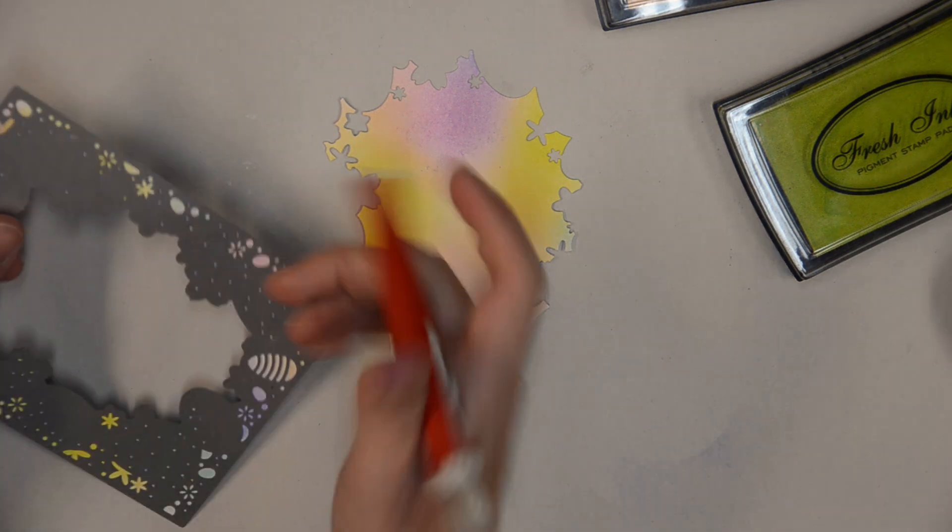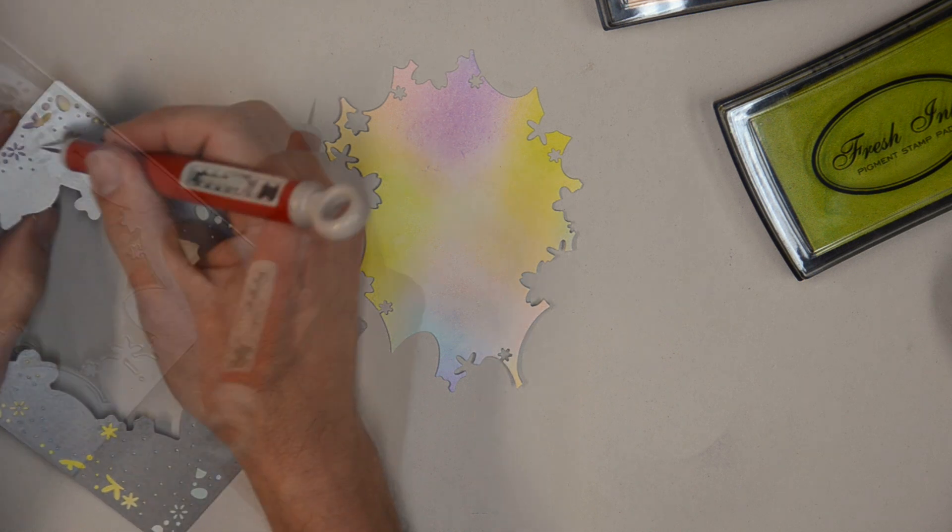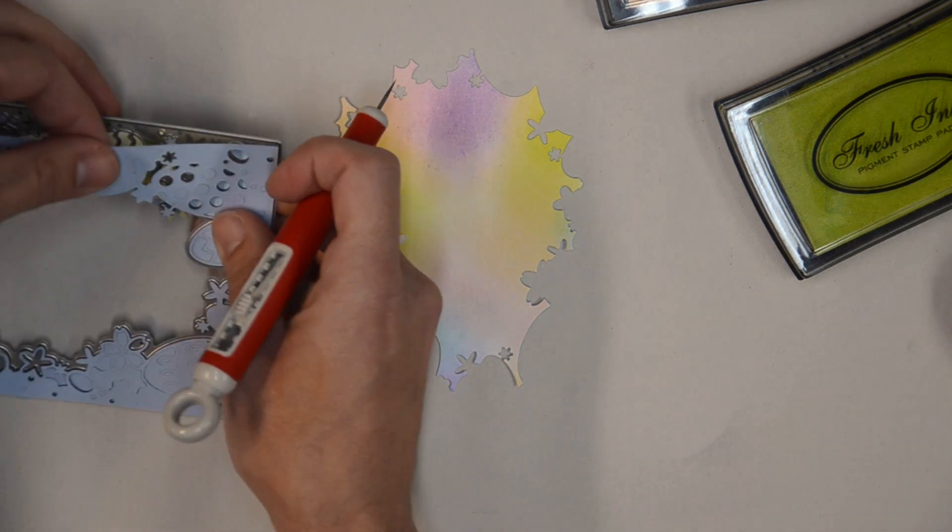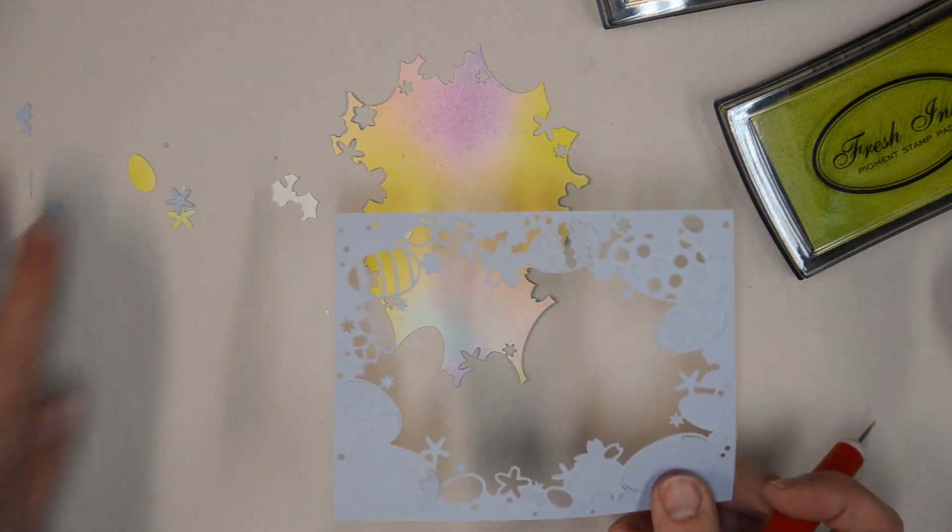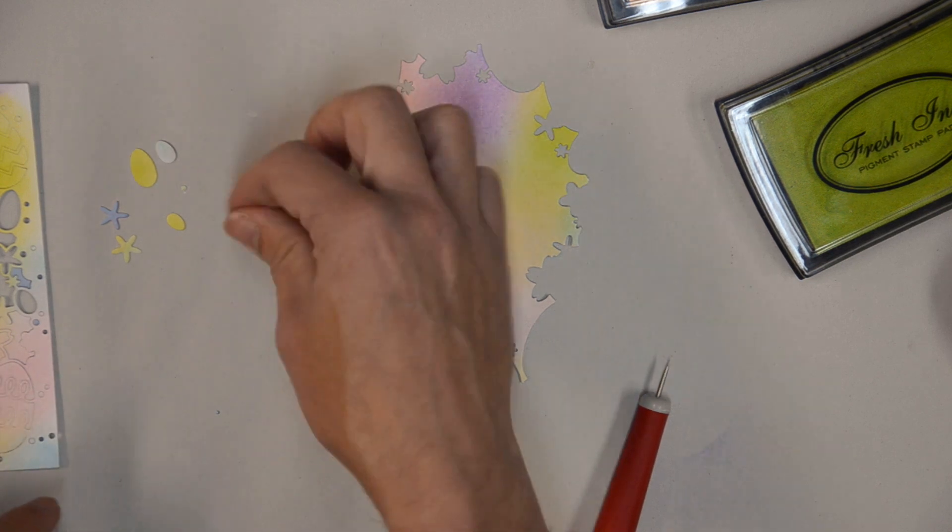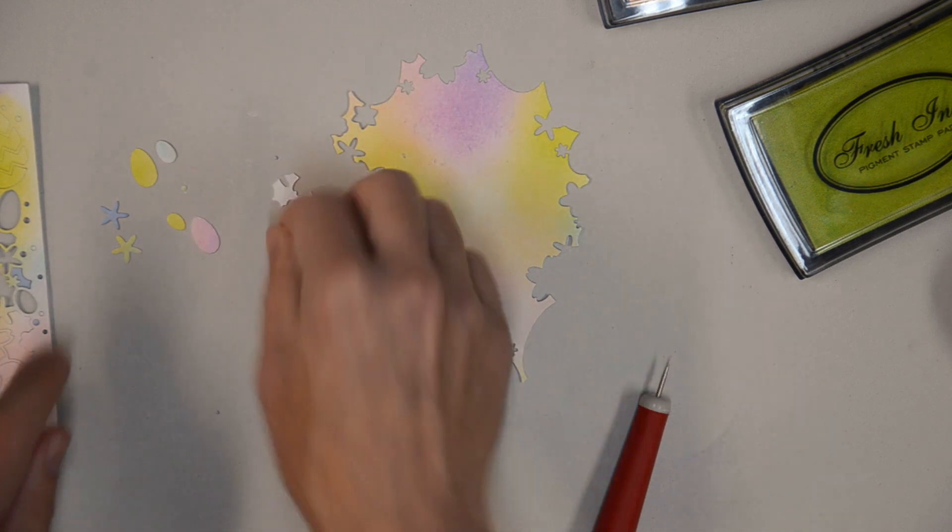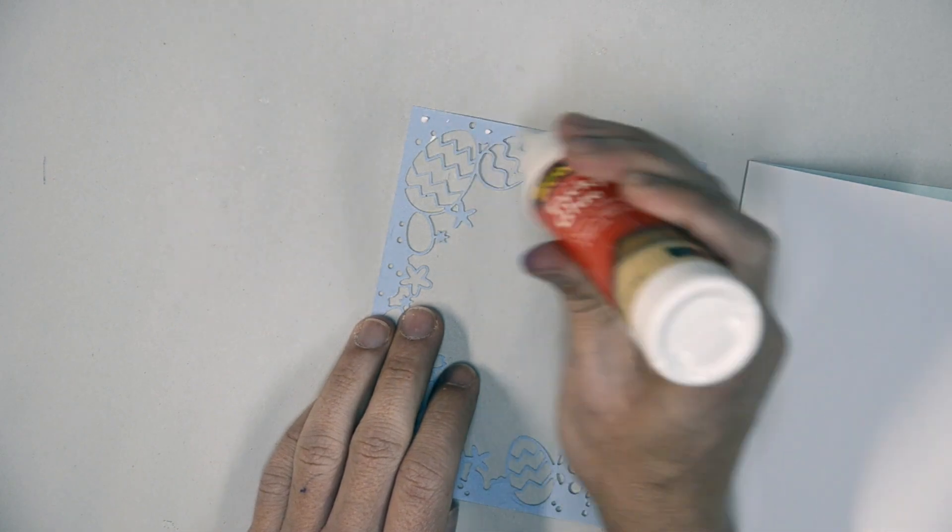I'm going to use my craft pick to loosen the die cut from the die. Just put the pick through tiny little holes in the die and gently remove it, moving around the edge until it pops out. One bonus with this technique is all the little shapes that pop out of the die cut as you're working with it. There's lots of little flowers and different sized eggs that come out that you can use on other projects.